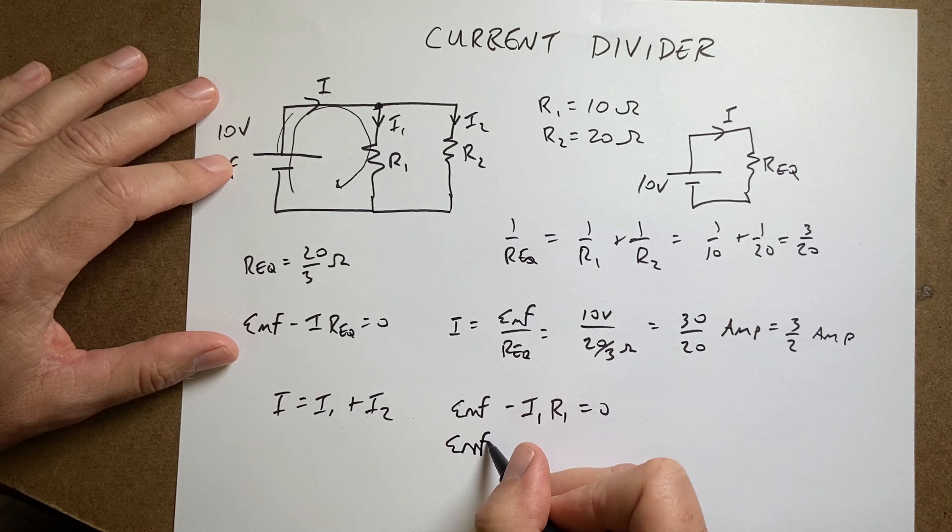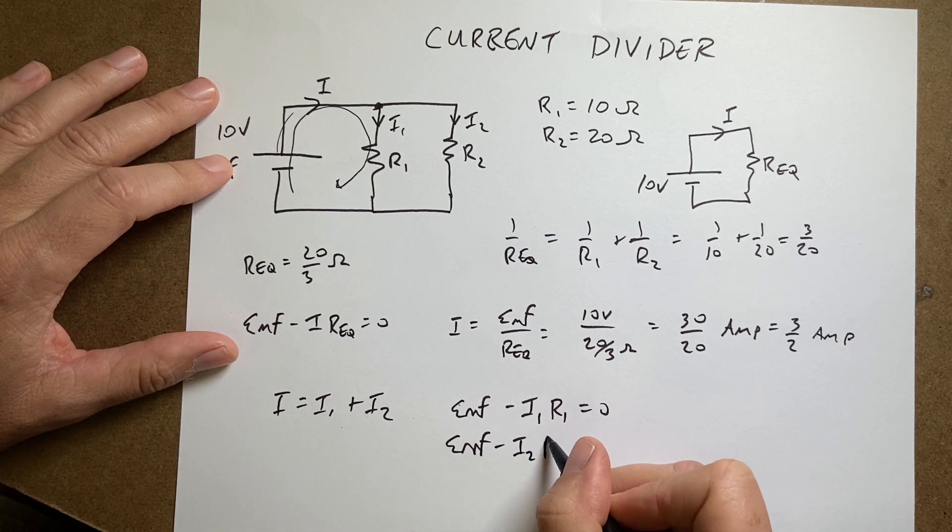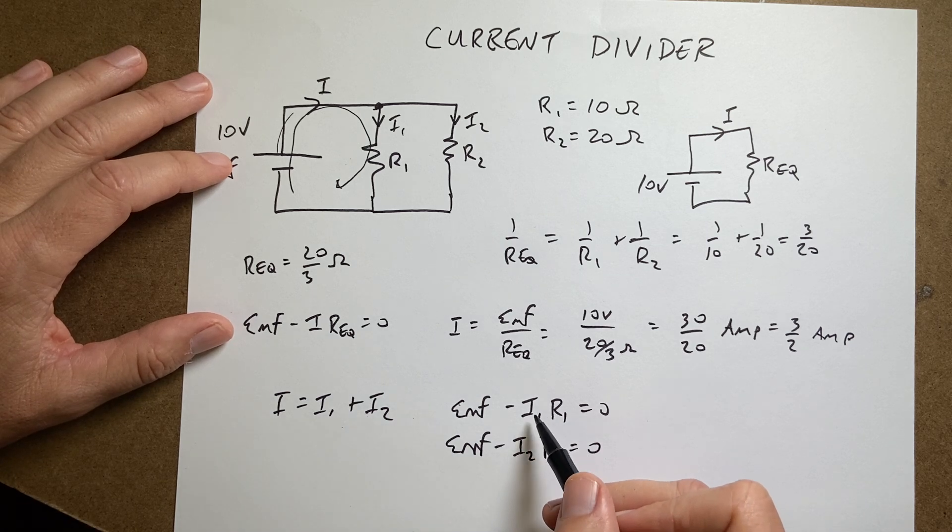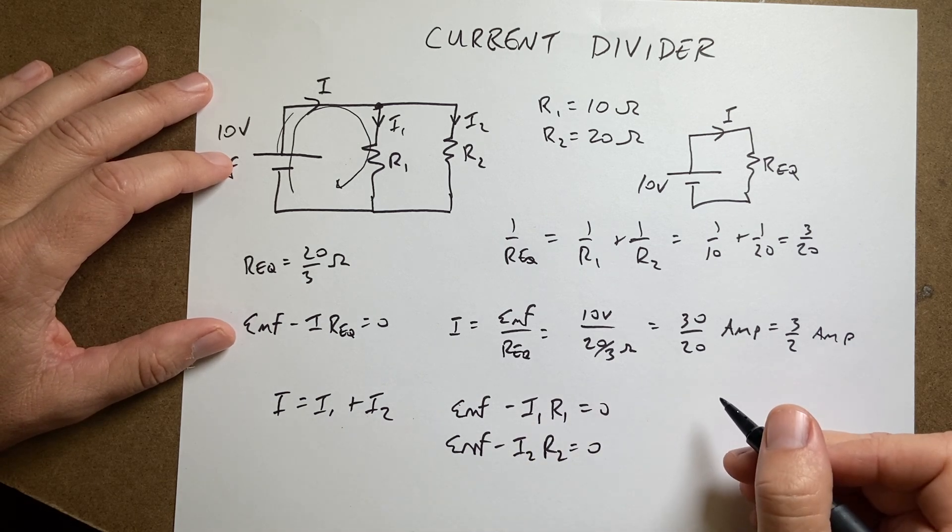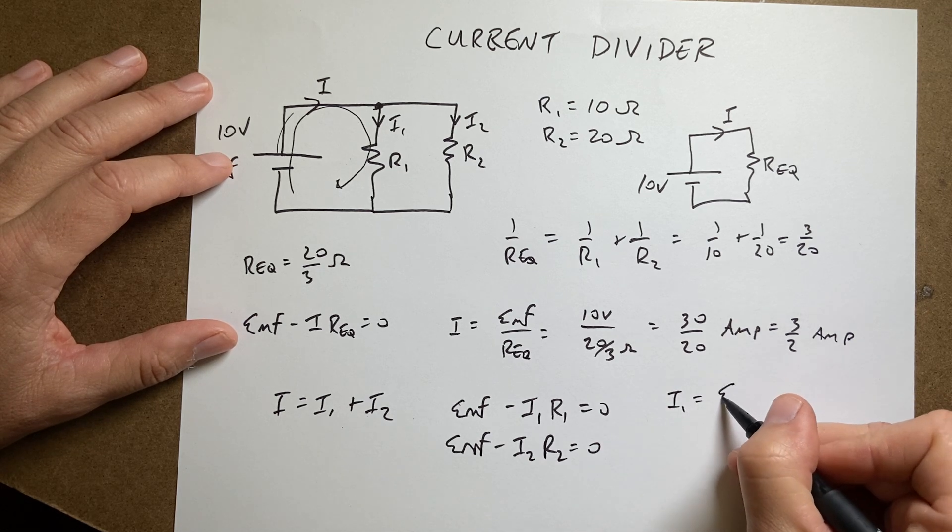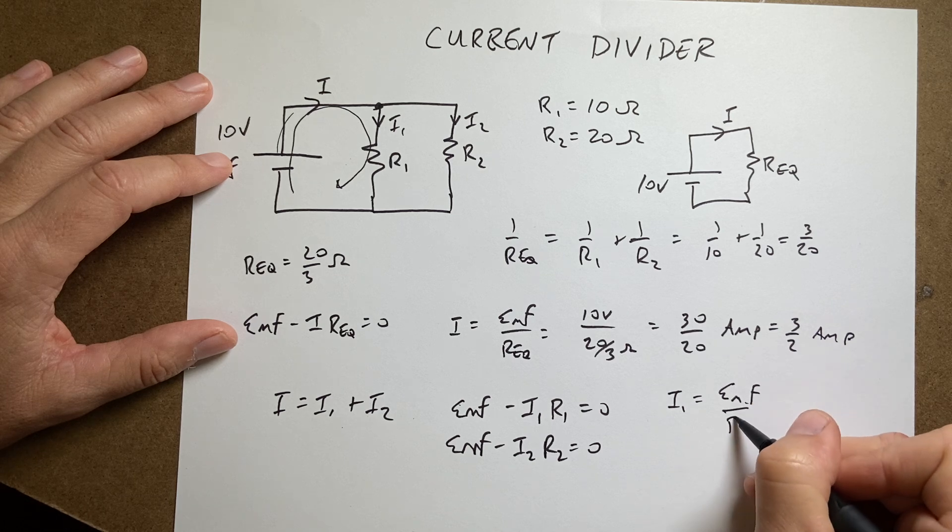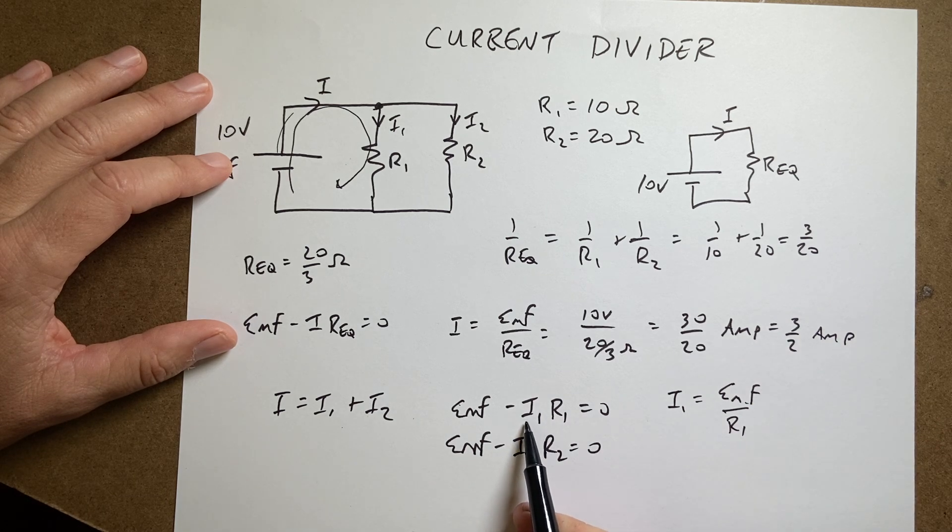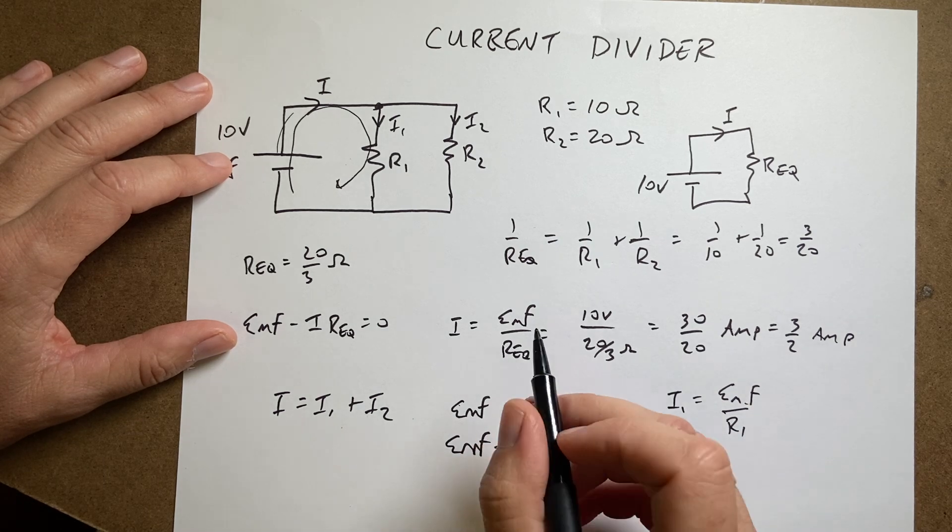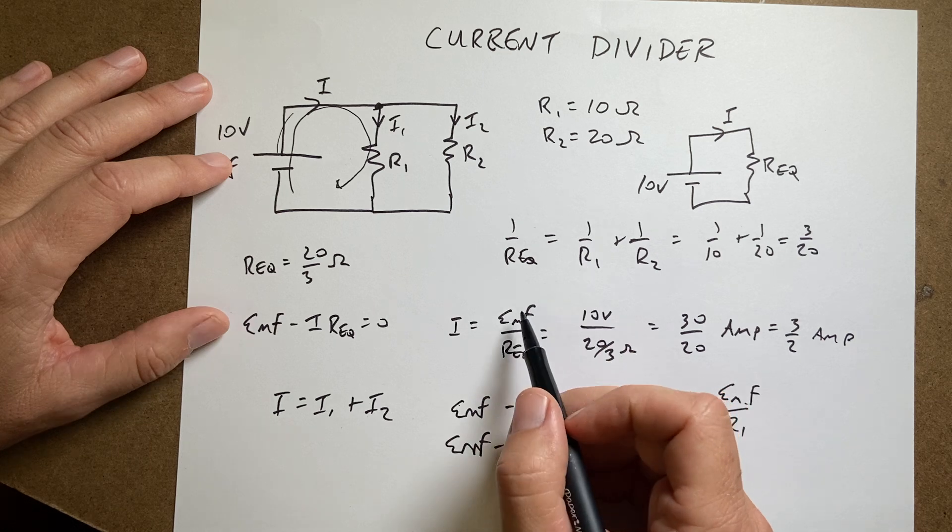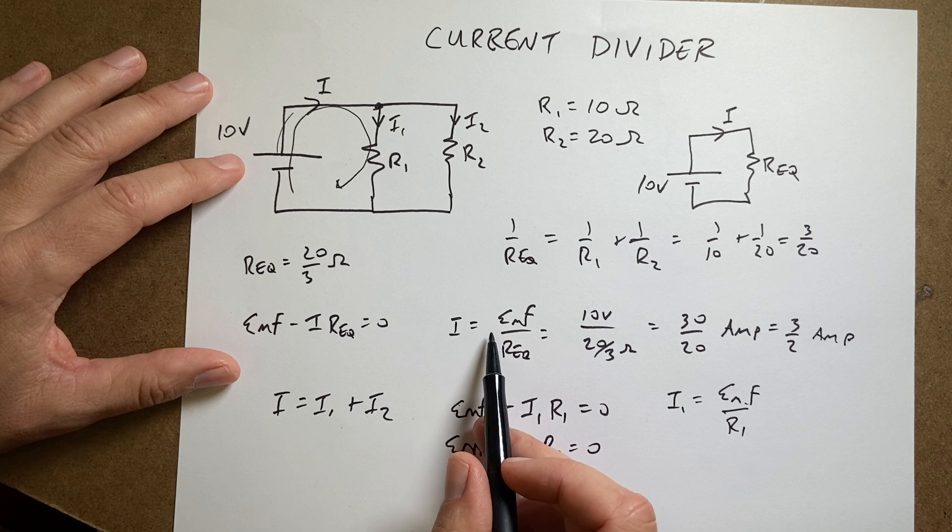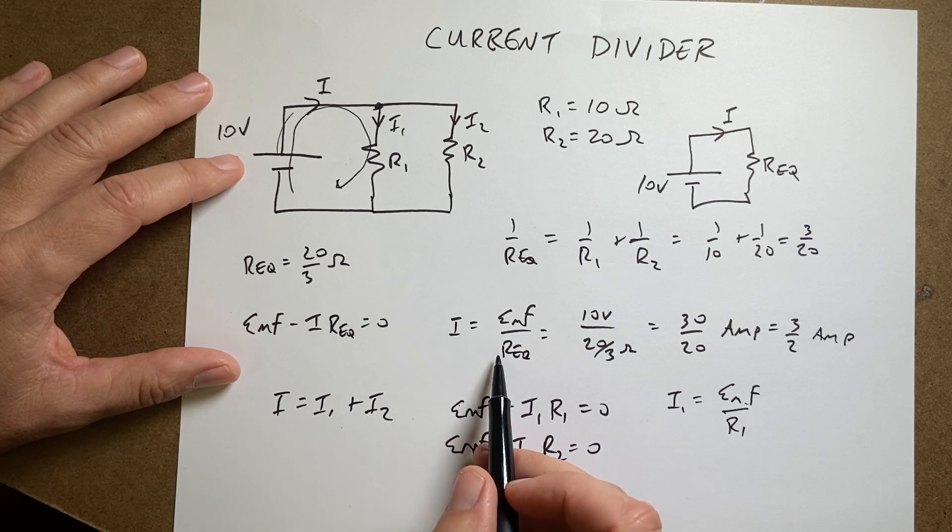And I get EMF minus I2 R2 equals 0. So let's solve for I1. So I1 is equal to EMF over R1, if I just add that to both sides and divide by R1. Now for EMF, let's go over here. Let's use this right here. Let's use EMF is I times R equivalent.